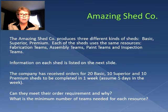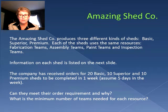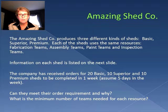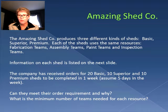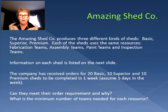We're going to be talking about the Amazing Shed Company. This company produces three different kinds of sheds: basic, superior, and premium. Each of the sheds use the same resources: fabrication teams, assembly teams, paint teams, and inspection teams. The company has received orders for 20 basic, 10 superior, and 10 premium sheds to be completed in one week — we'll assume five days in the week. The question is: can they meet their order requirement and why? And what is the minimum number of teams needed for each resource?